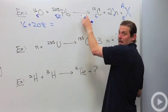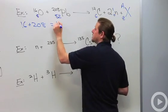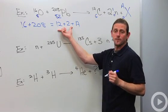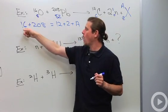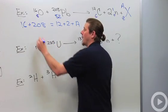Looking along the top, 16 plus 208 has to equal 12 plus 2 plus A. 12 and 2 is 14, so I'm going to take that away from the 16 and that'll give me 2. 2 plus 208 is 210.